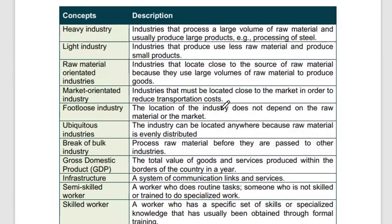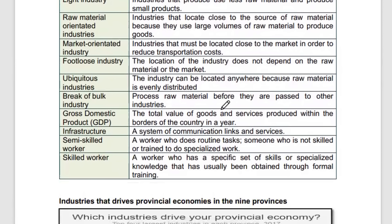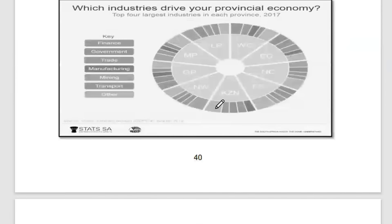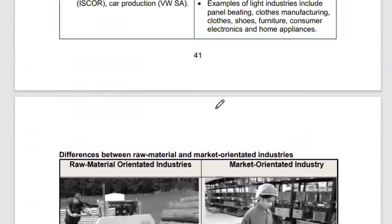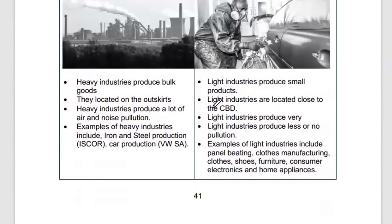Moving to the secondary sector — it deals with manufacturing. We have a classification of types of industries. The first classification is heavy and light industries. Heavy industries produce bulk goods in large quantities; they are located in the outskirts away from the CBD and residential areas; they produce a lot of air and noise pollution. Examples include iron and steel production and car production.